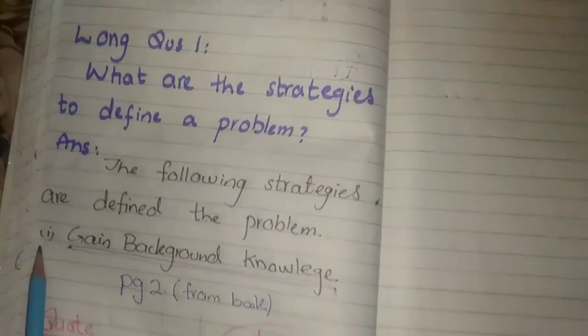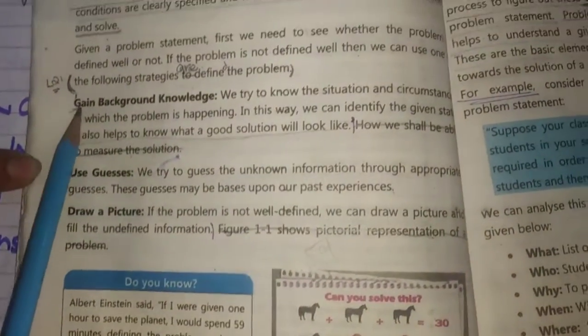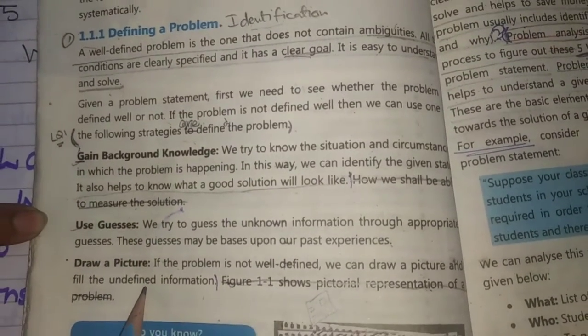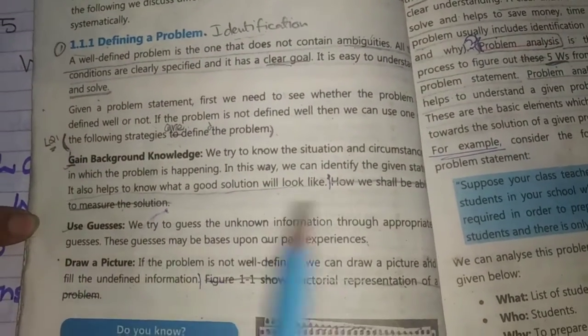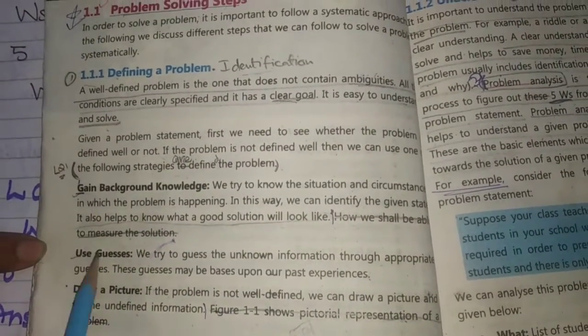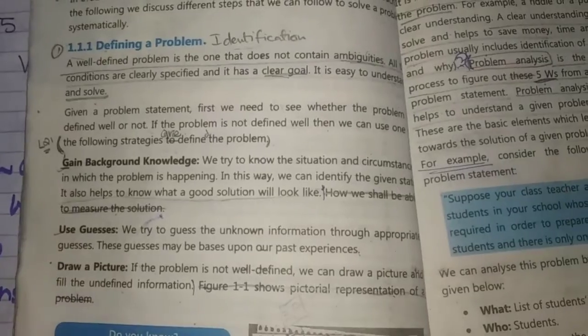First one is Gain Background. On page two you have to draw a picture of three things. This is your homework. You have to write the three strategies.